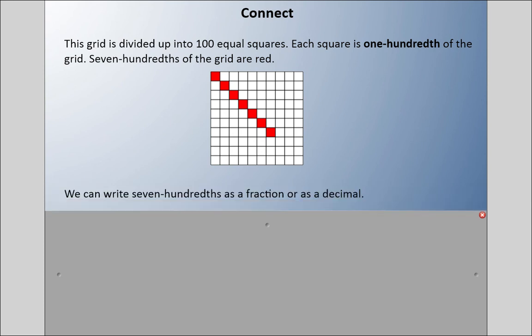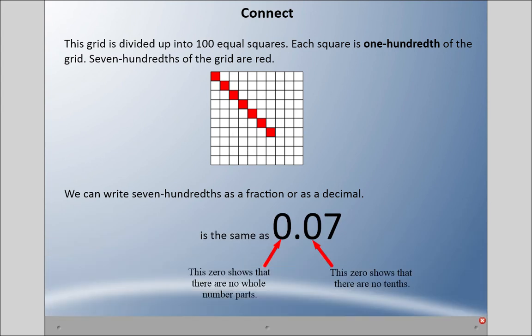We can write seven-hundredths as a fraction or as a decimal. Here we have a decimal, and it's the same as zero and seven-hundredths. This first zero is telling us that there's no whole parts. If this whole grid was colored in red, then this would be a one.